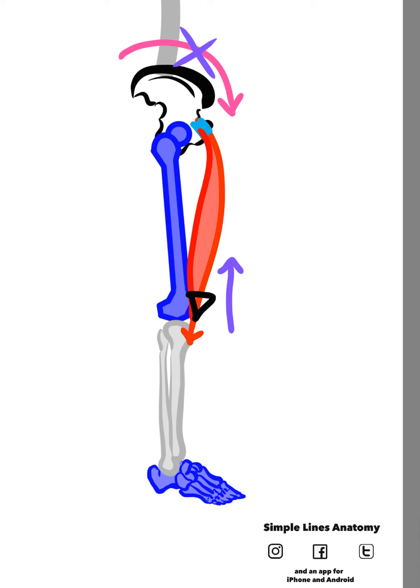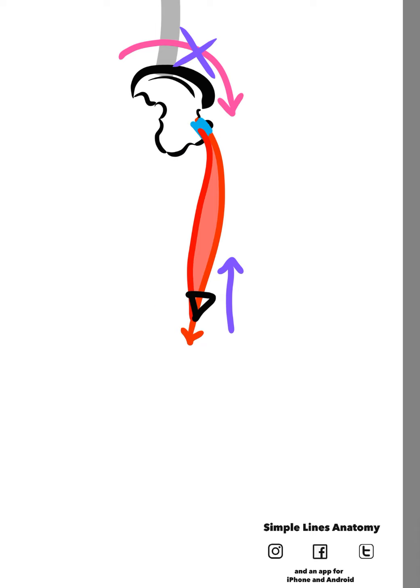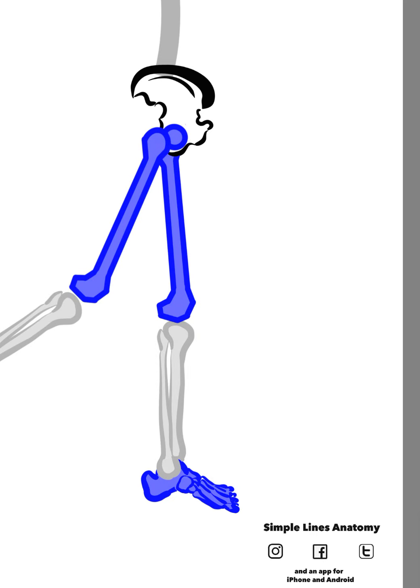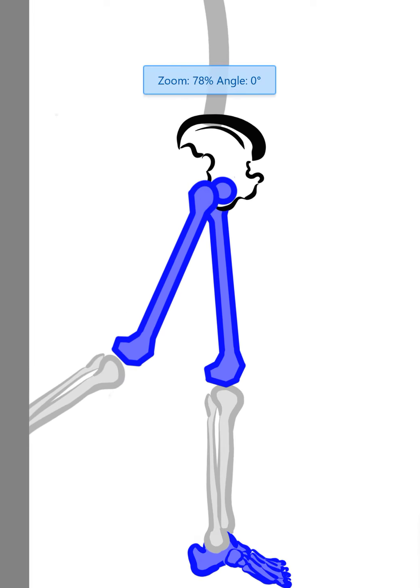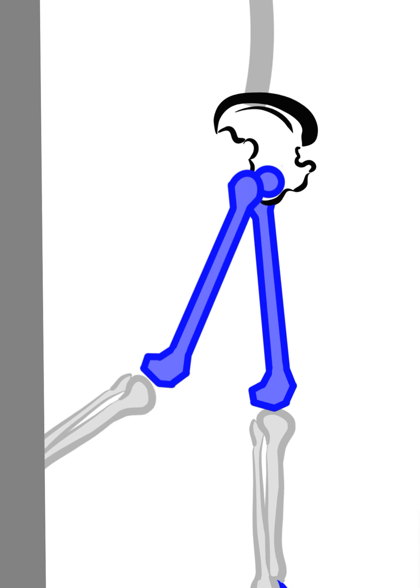So we wouldn't really get much of an anterior innominate just from that alone. It's too simple. So instead, we put it like this, in walking position.